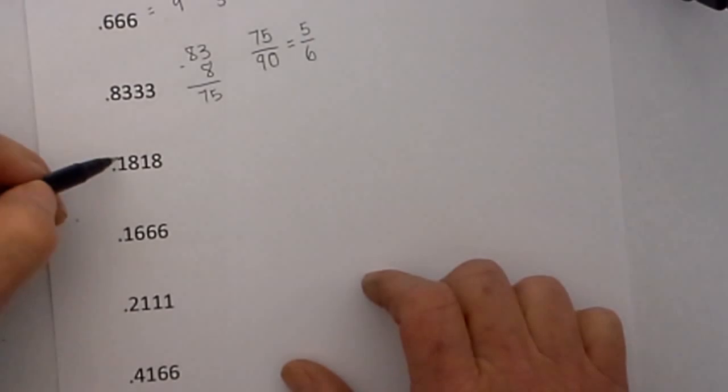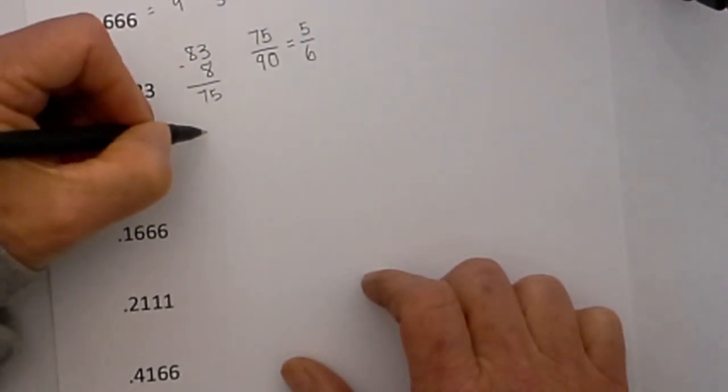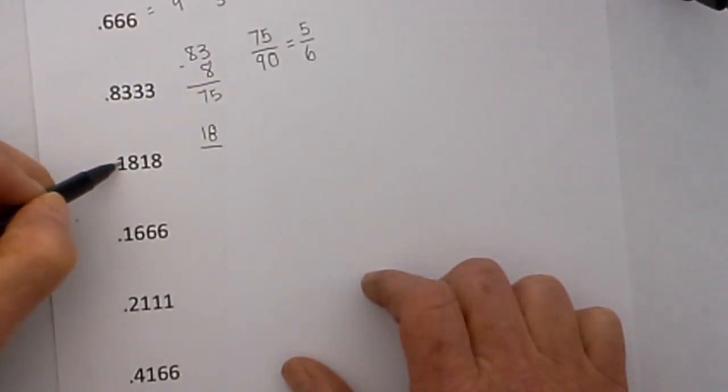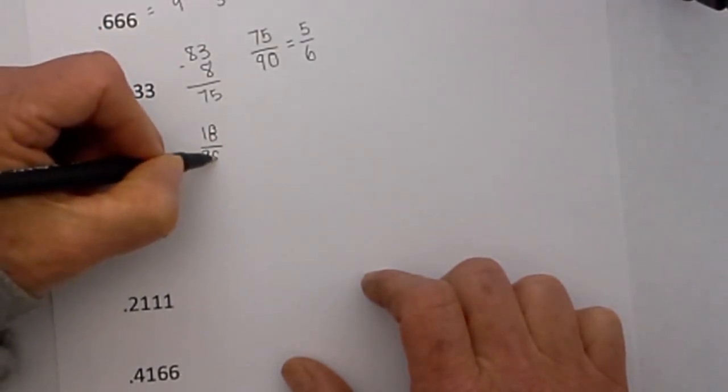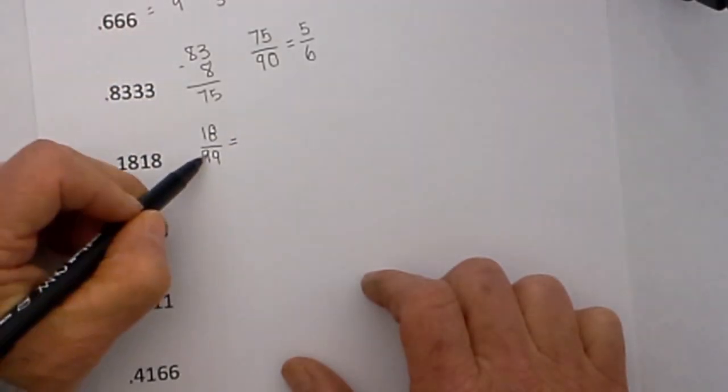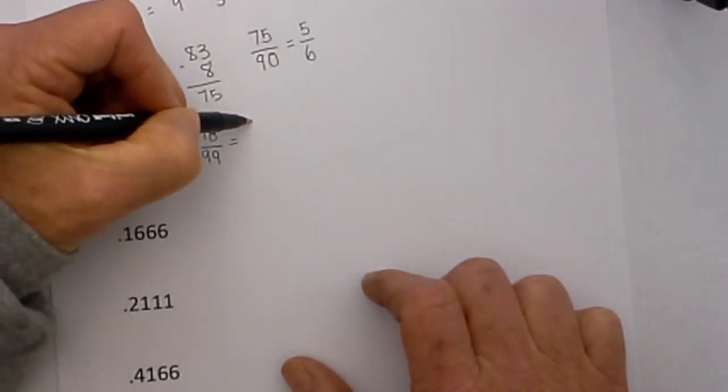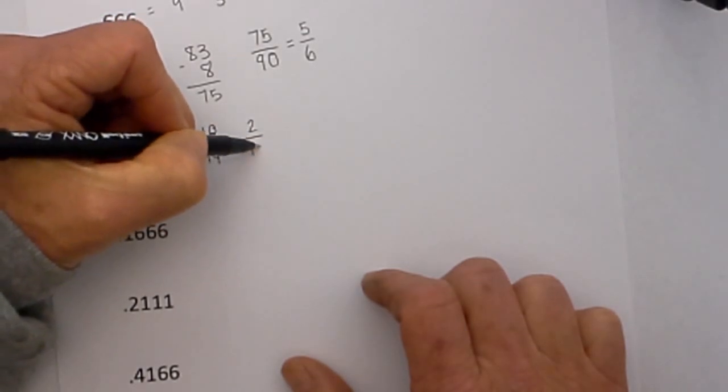How about this one .1818. Now we have a repeating number with two digits so I write 18 and then for each digit that is repeating I write a 9 so that becomes 99. And 18 over 99 if you reduce it down is 2 elevenths.